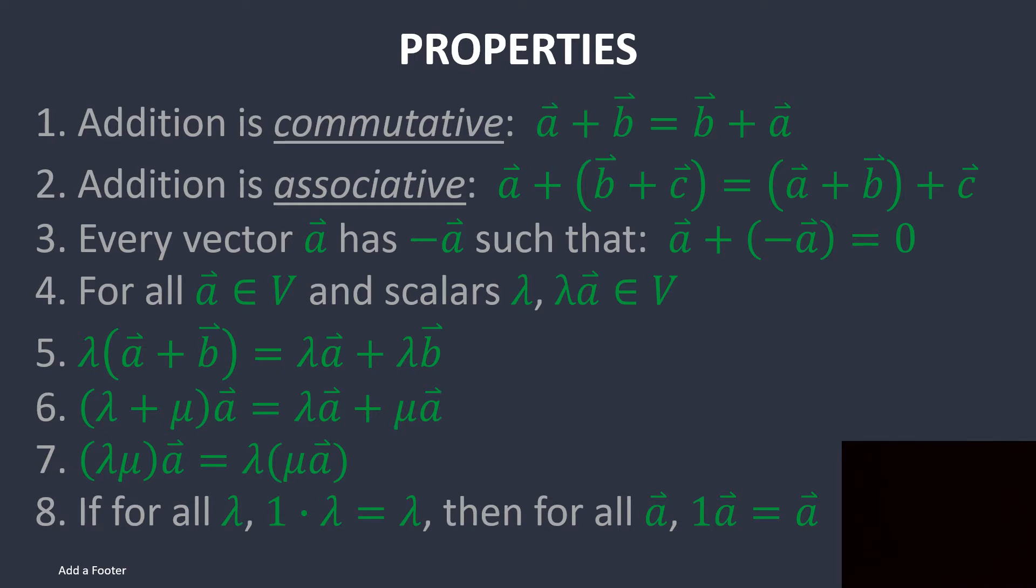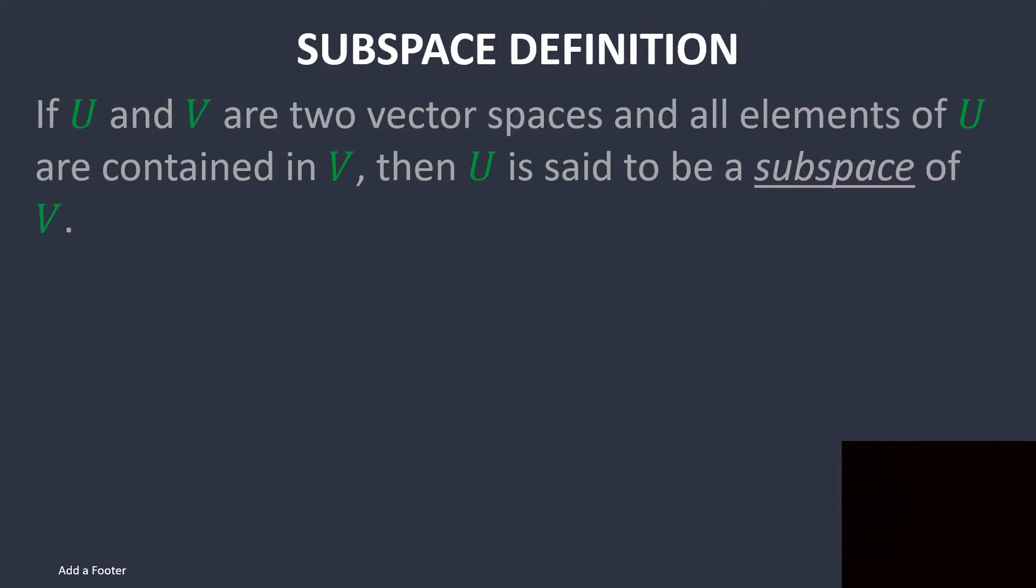Addition is commutative, addition is associative, every vector has a negative inverse, and everything else. These are all axiomatic statements that you can prove relatively easily, thus I will not prove them because it's kind of pointless to do so.